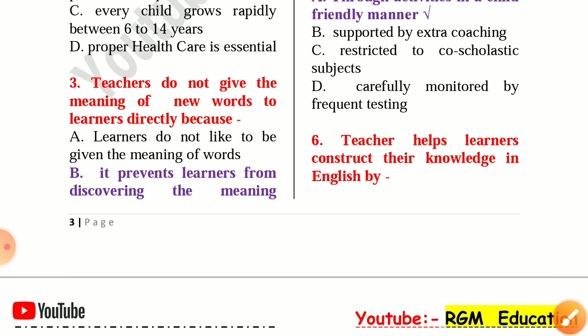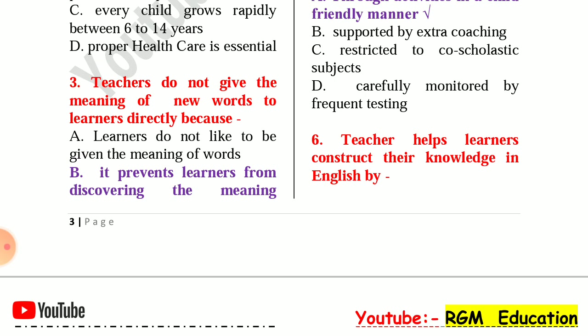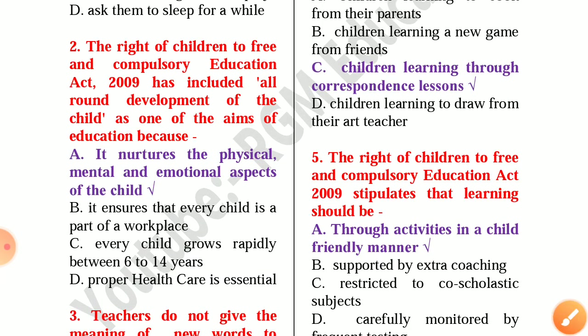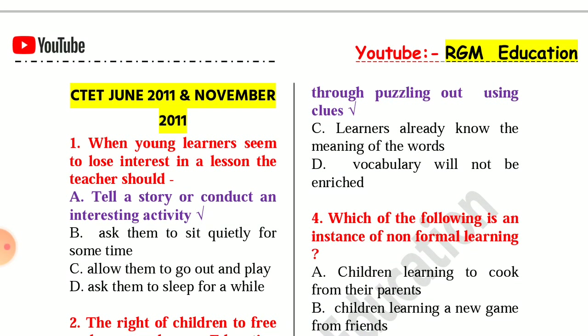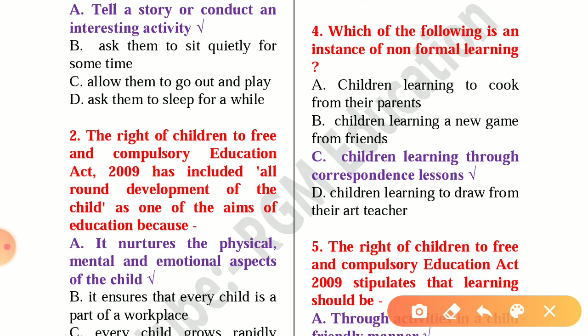Number 3: Teachers do not give the meaning of new words to learners directly because it prevents learners from discovering the meaning through puzzling out using clues. Question number 4: Which of the following is an instance of non-formal learning? Answer: Children learning through correspondence lessons.